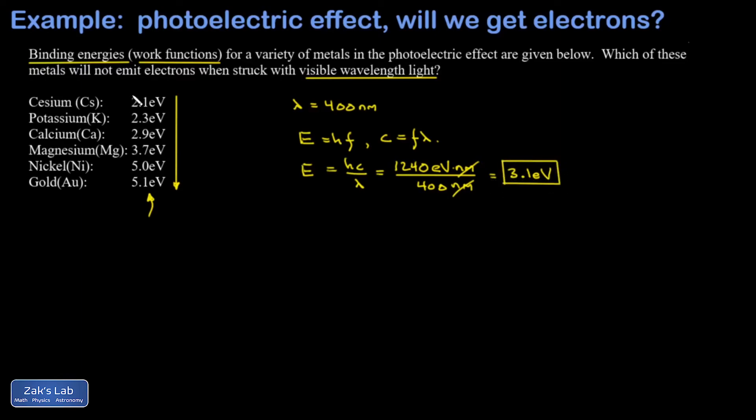Then I just have to look through my list and find the cut point. It looks like the top three metals have binding energies that are less than 3.1, so if we hit these metals with the full spectrum of visible light, we're going to get some electrons popped off by the violet light.